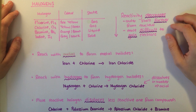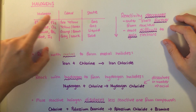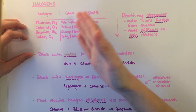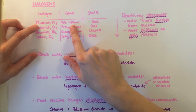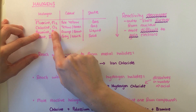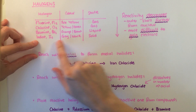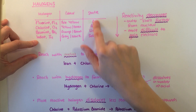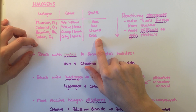The elements in group 7 are known as halogens. They are always found in molecules of two atoms, hence the two in their formula. You need to know the colour and state of each of them at room temperature: fluorine is a pale yellow gas, chlorine is a yellow-green gas, bromine is an orange-brown liquid, and iodine is a grey-black solid. They get darker in colour and have a lower melting point as you move down the group.